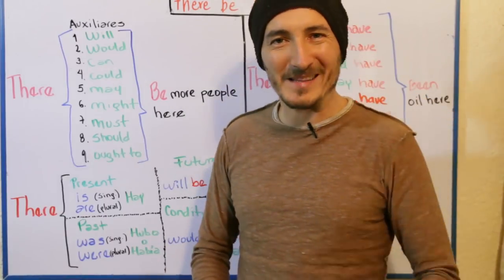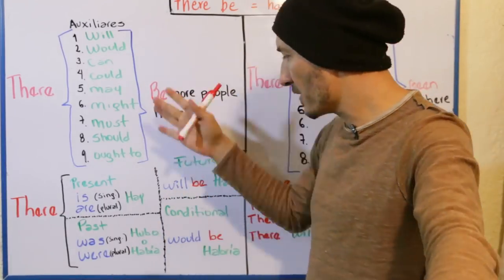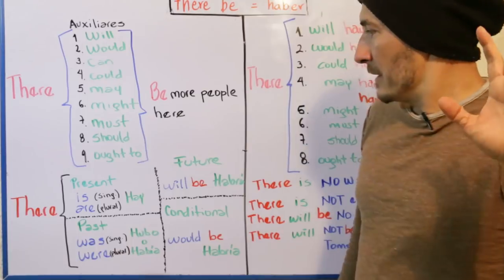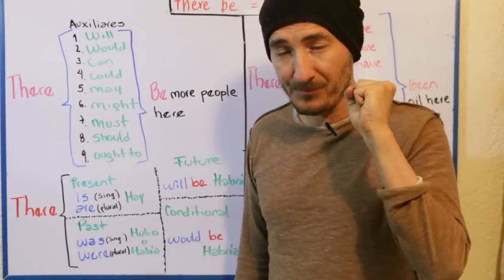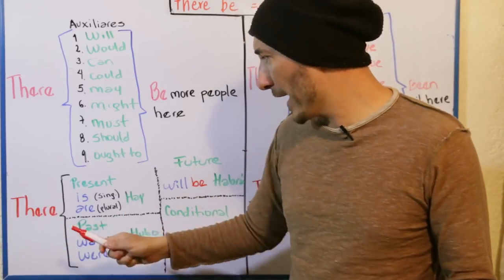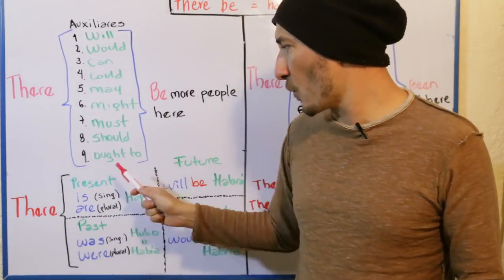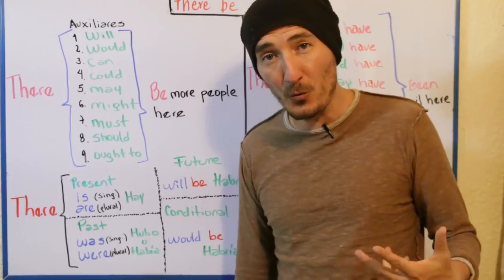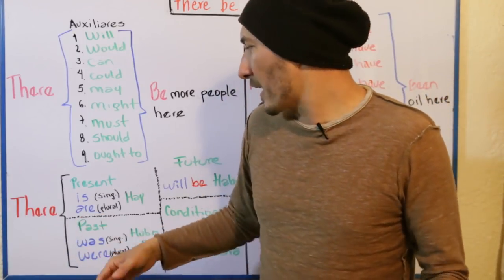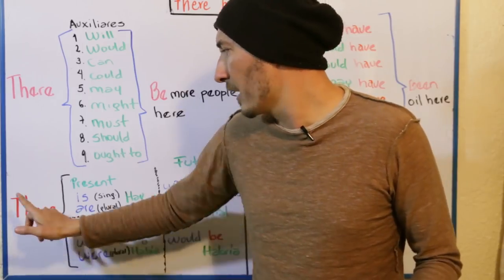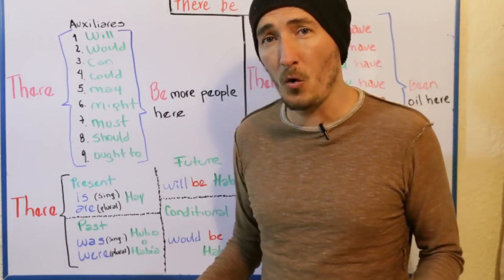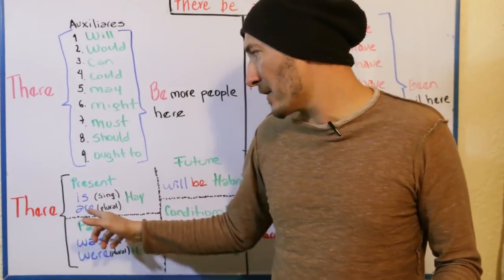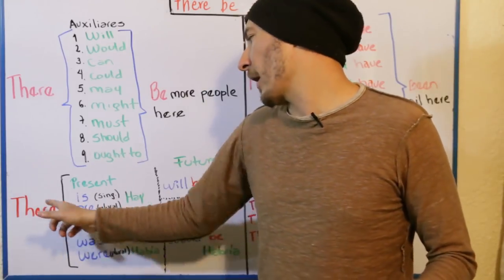Si sientes que hay mucho desorden, vamos a mostrar un resumen rápido de todo lo que hay en este video. Tenemos el presente para decir 'haber' de existencia: hay uno, hay dos — there is one, there are two. There is a house — hay una casa. There are two houses — hay dos casas. Si fuera en pregunta: hay dos casas — cambio el 'are' antes del 'there' y digo: are there two houses? O are there any houses? Para el singular: is there a house? Is there one house? Is there any house?